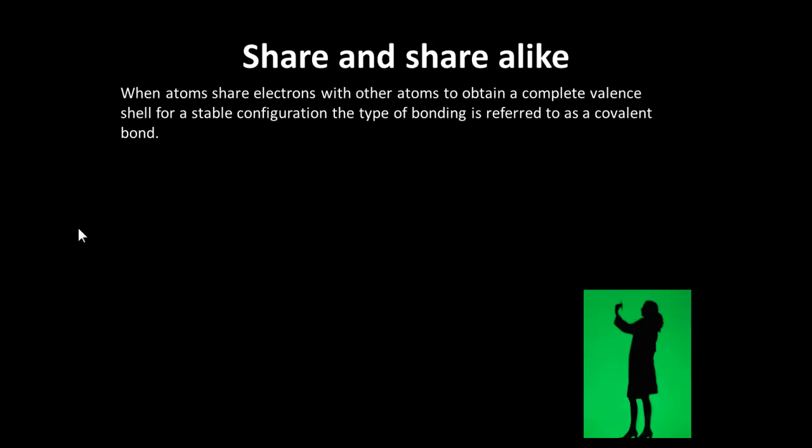Okay, so when atoms share electrons with other atoms, then we have something different. Ionic bonding was concerned with gaining and losing, but you can also have sharing of electrons, and then we get what we call covalent bonds.